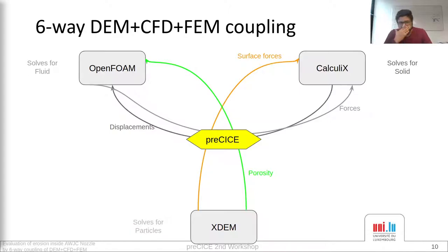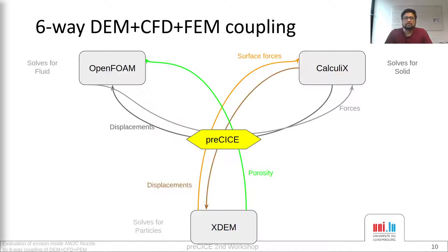For the coupling between XTM and Calculix, it is straightforward. Like the 2-way OpenFOAM and Calculix coupling, XTM gives the forces to Calculix, and Calculix solves for displacements and gives back the displacement to XTM. As of now, we do not have to modify the Calculix adapter to have this coupling. For the coupling between XTM and OpenFOAM, it is a bit more complicated and we need some modifications.